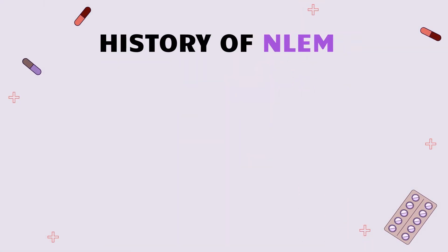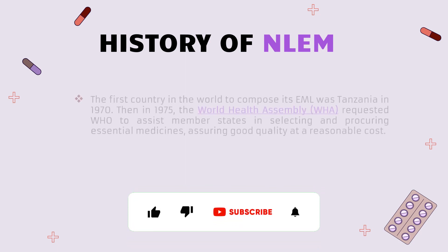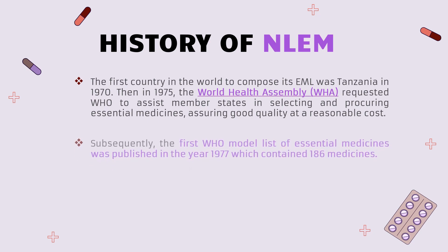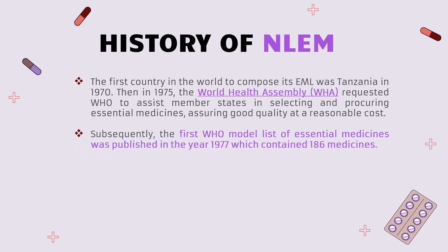Let's understand the history of NLEM. The first country in the world to compose an essential medicines list was Tanzania — which was surprising — and that was in the year 1970. Then in 1975, the World Health Assembly, which later became WHO, assisted member states in selecting and procuring essential medicines and assuring good quality at a reasonable cost. Subsequently, the first WHO Model List of Essential Medicines was published in 1977, which contained 186 medicines. This WHO model list is now released every two years.